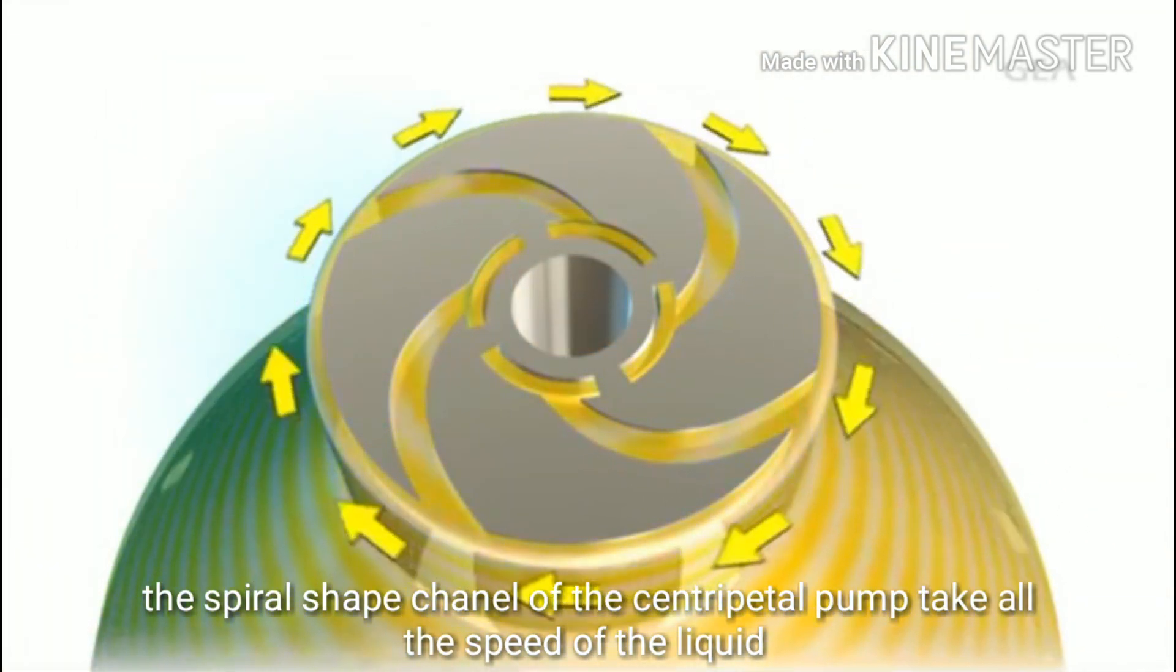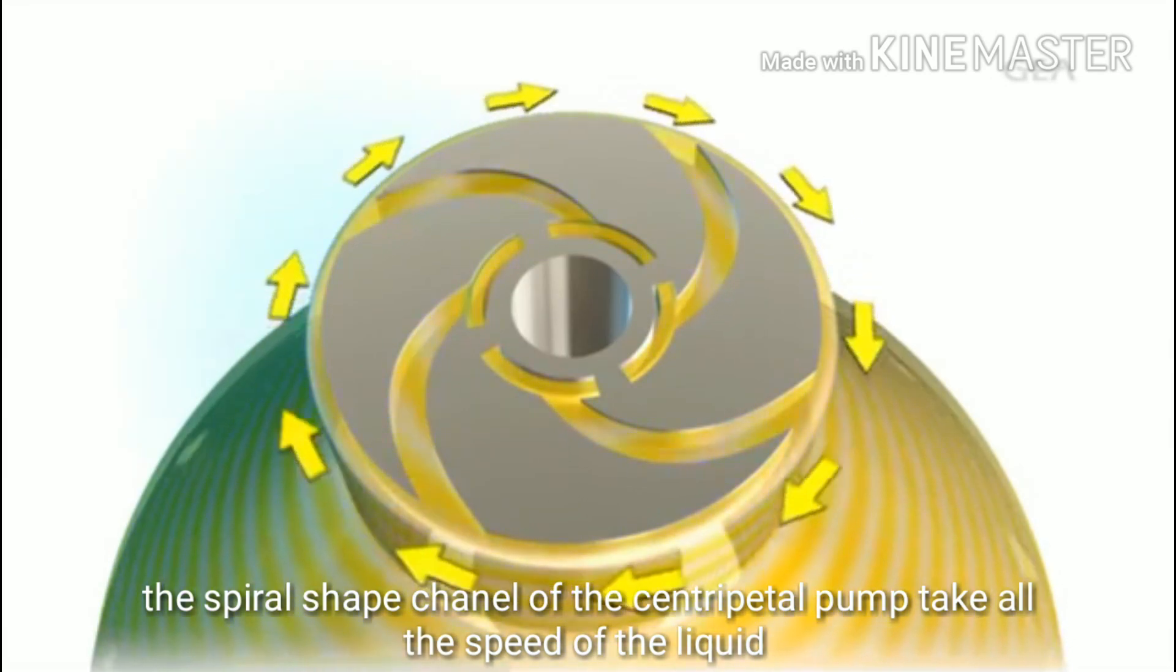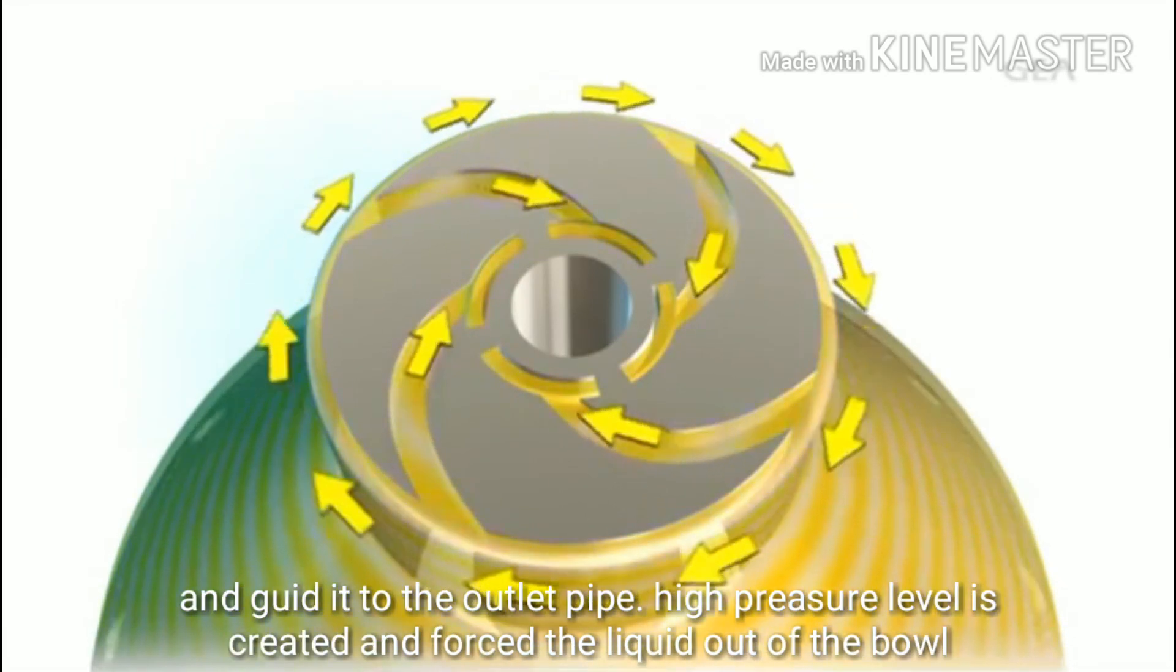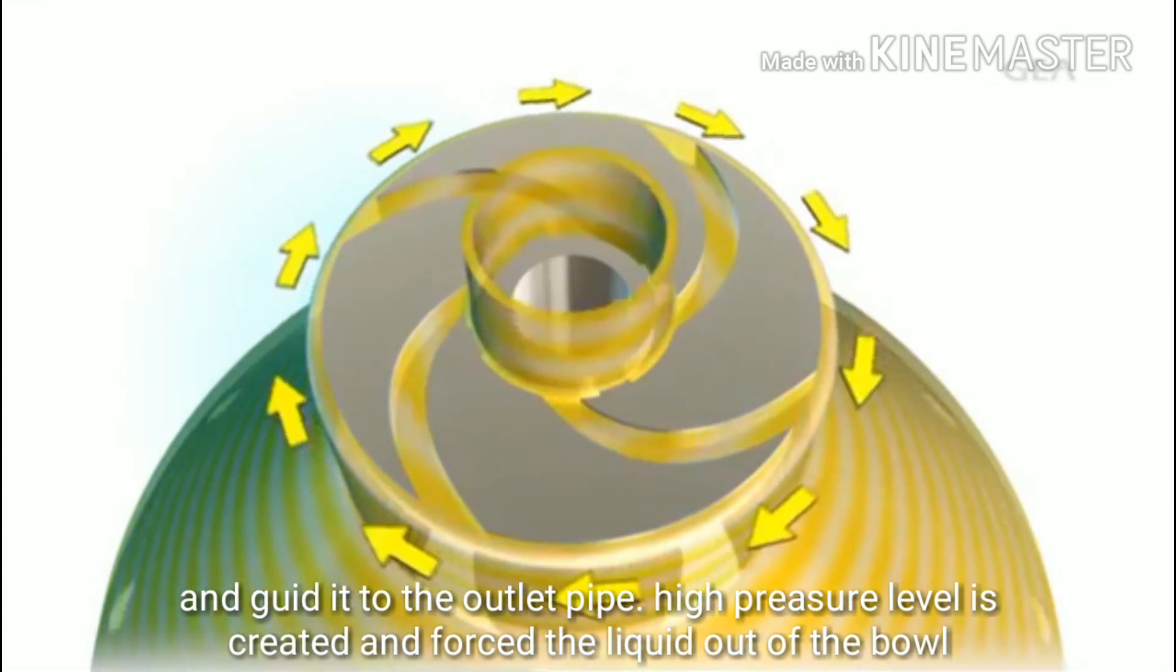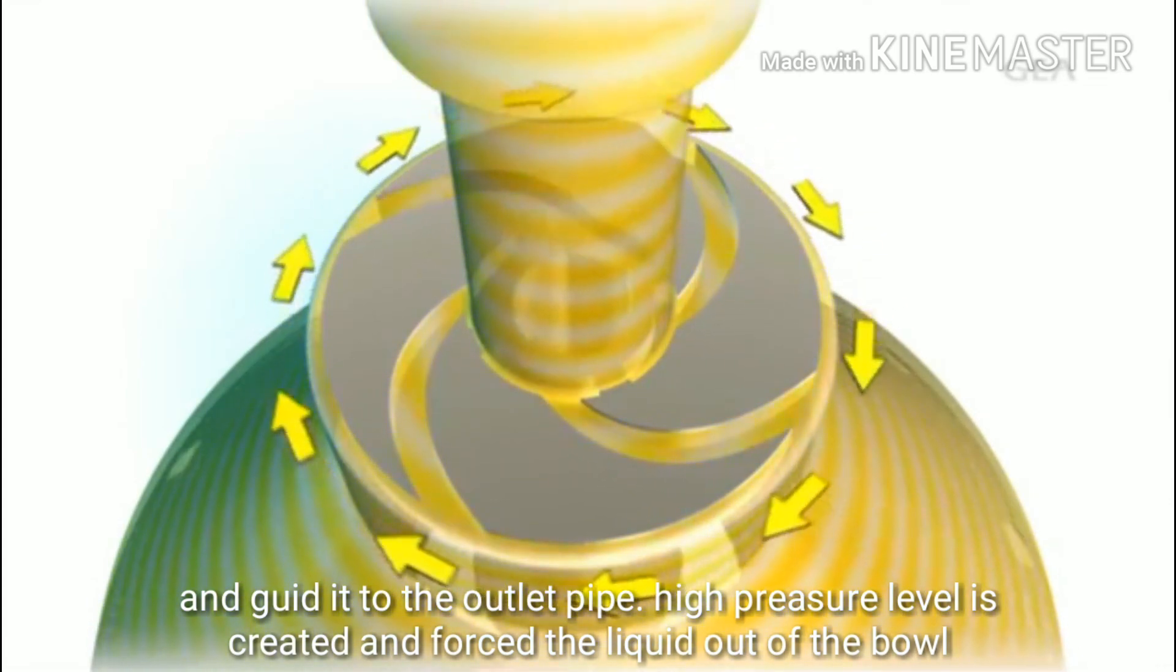The spiral shaped channels of this centripetal pump take up the speed of the liquid and guide it to the outlet pipe. A high pressure level is created there which forces the liquid out of the bowl.